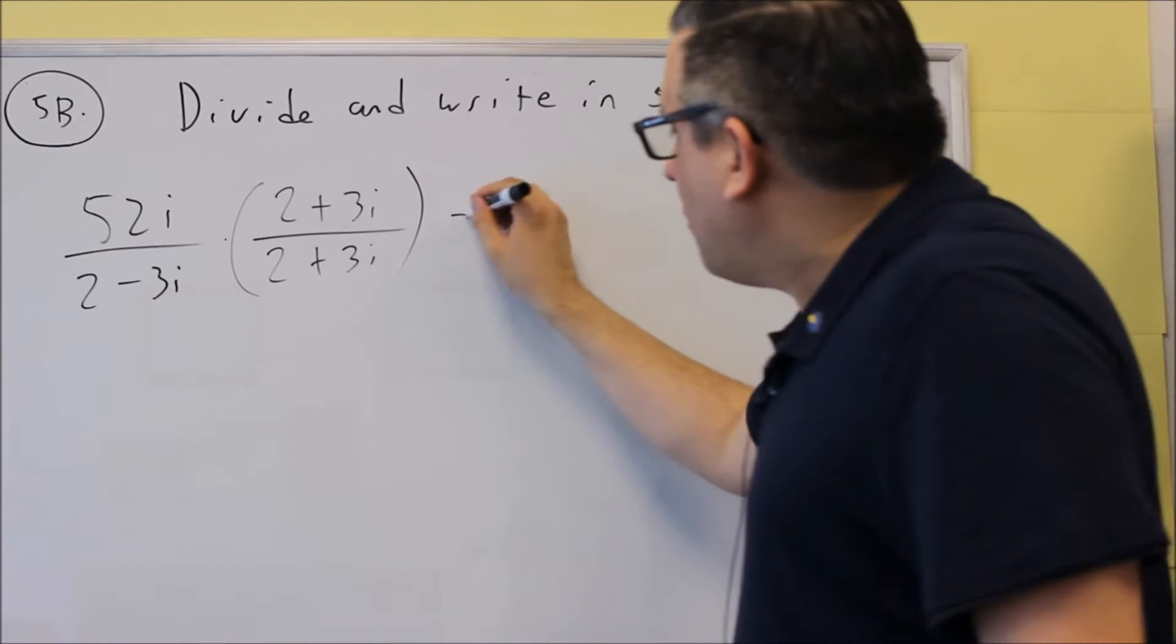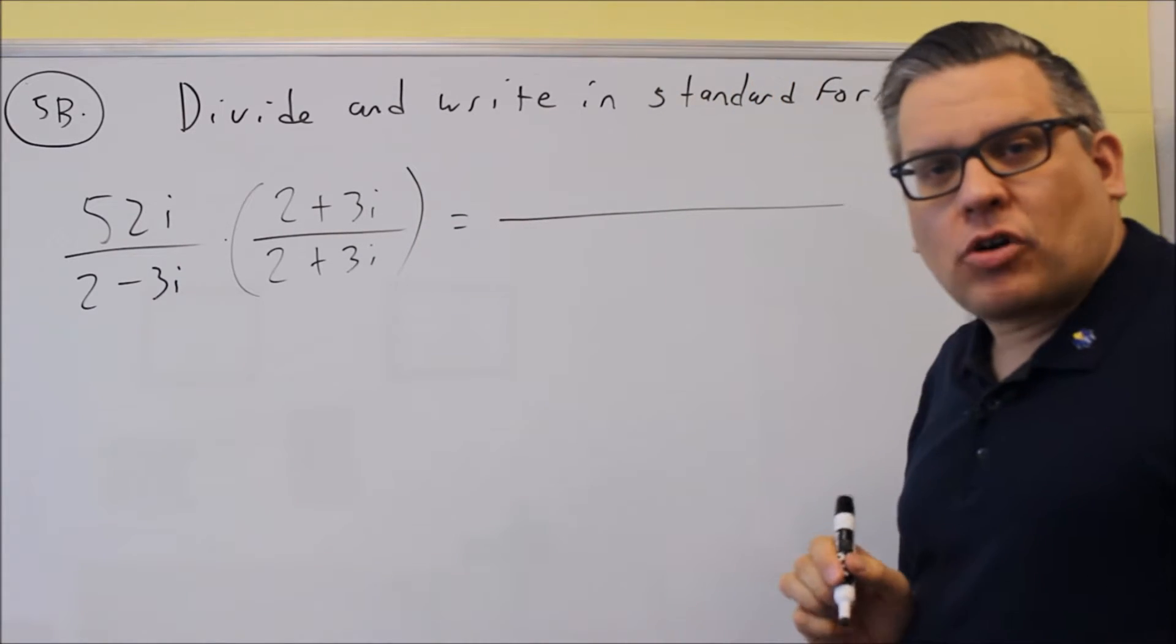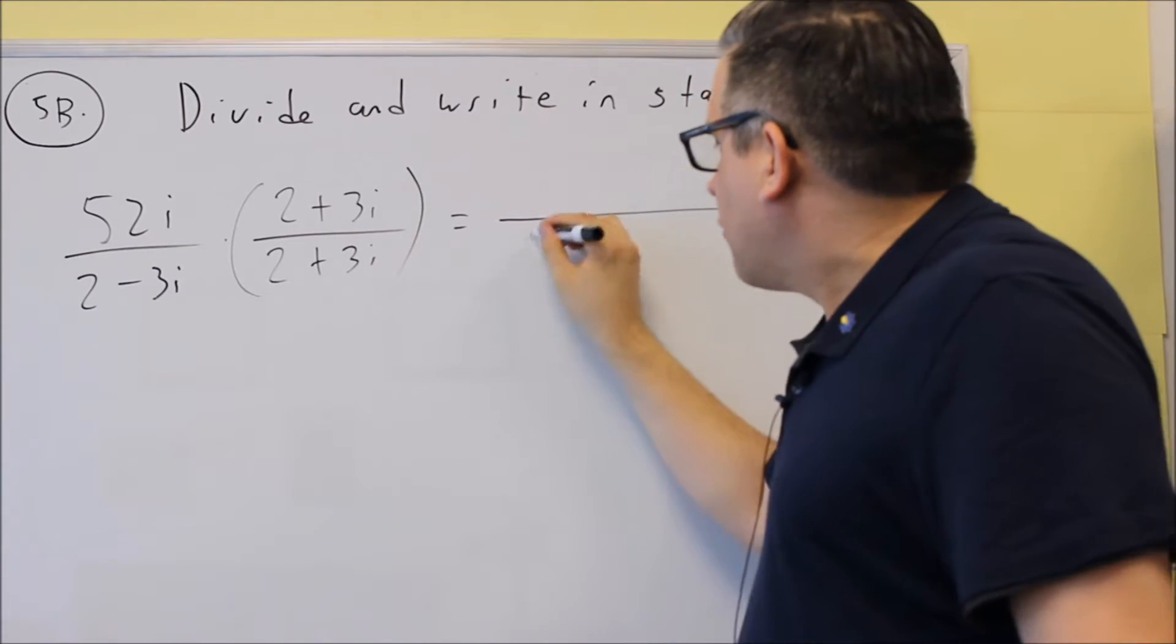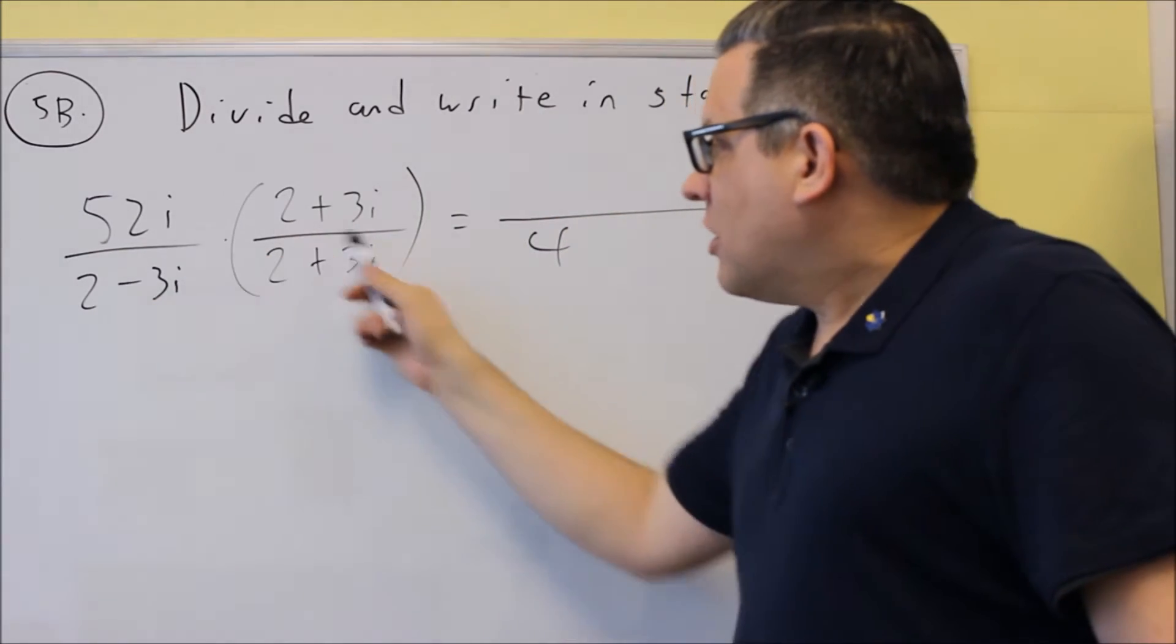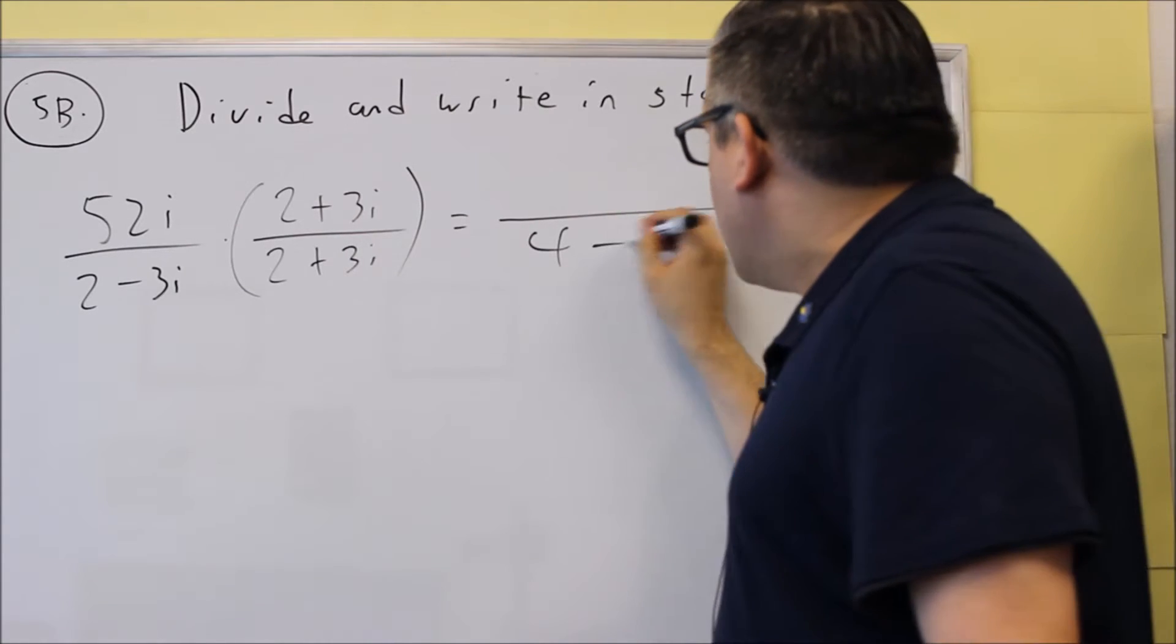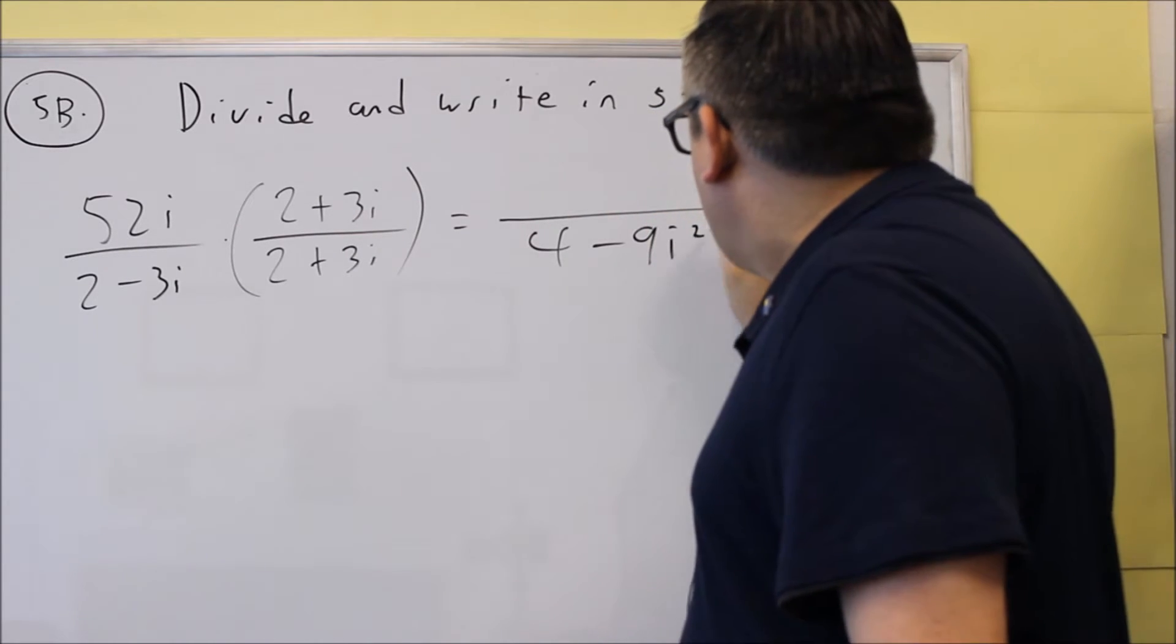So we have it set up that way. We're going to multiply across the top, across the bottom. Let's do the bottom one first. We do 2 times 2 is 4. Then we get 6i and minus 6i cancels out and you get minus 9i squared.